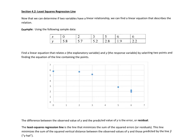Welcome to section 4.2, Least Squares Regression Line. Now that we can determine if two variables have a linear relationship by looking at the linear correlation coefficient, we can actually find a linear equation that describes the relation. That's what we're going to do in section 4.2.